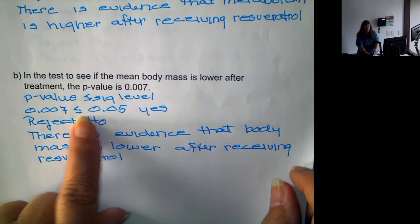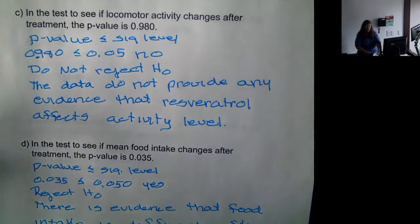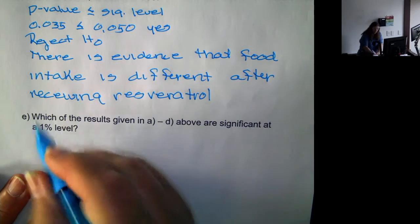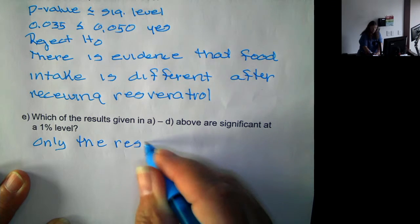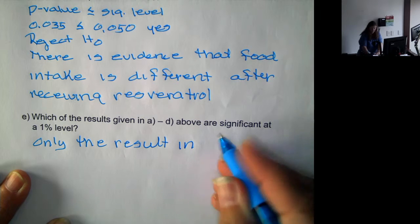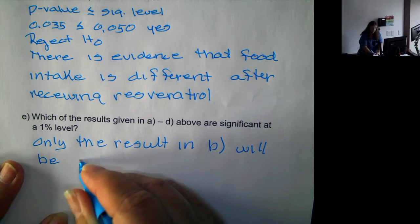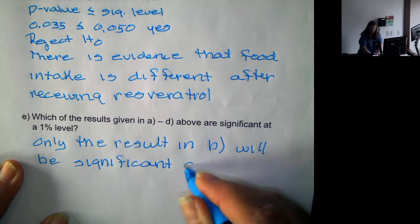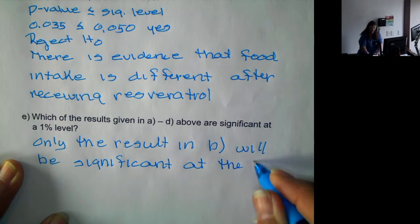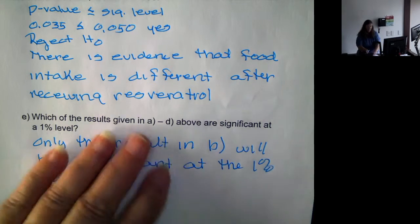0.007 less than or equal to 0.010. Yes. That result would not change. Part C would not change. Part D would change. So only the result in B will be significant at the 1% level. And that was the one on body mass.